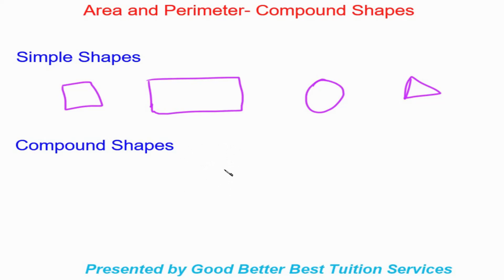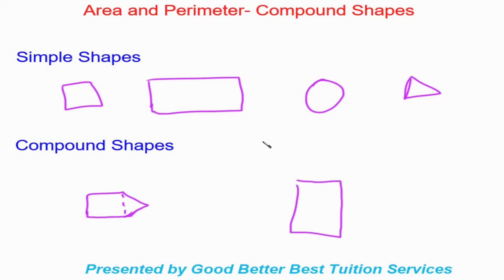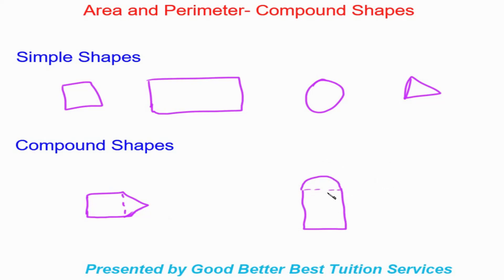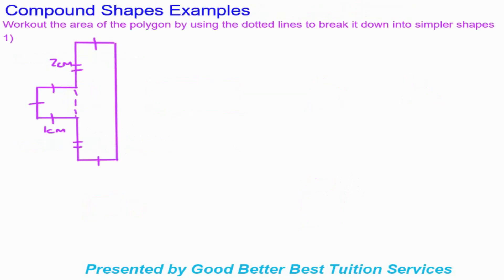For example, if I take a square and a triangle I'd form a compound shape. You can see here we have a square and a triangle, and both sections would be separated by this dashed or dotted line. Similarly, if we took a rectangle with a half circle on top, that would also be a compound shape. When we come across compound shapes, we look at those dashed lines to distinguish the different types of shapes so we can figure out the area and perimeter. Let's get into some examples.